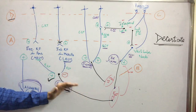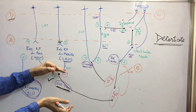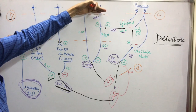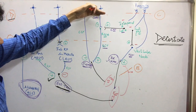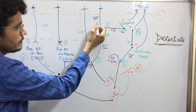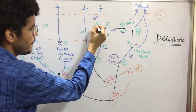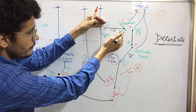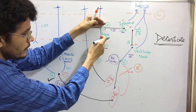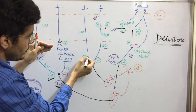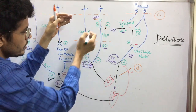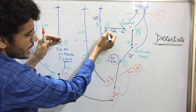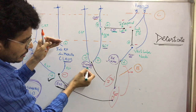That is regarding the reticular formation. Now coming to the rubrospinal tract: if we do this cut section where the cerebral cortex fiber is removed, then the cerebrorubral tract, which is stimulating the red nucleus, will be removed. But the red nucleus is still intact and it is getting stimulated from the cerebellorubral tract. The corticospinal tract and the corticorubral tract will both be cut, but the red nucleus is still receiving stimulation from the cerebellorubral tract.